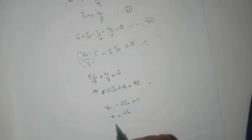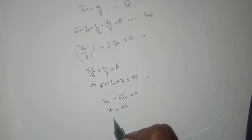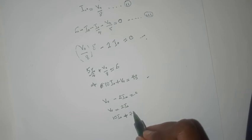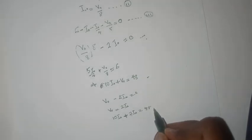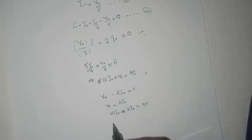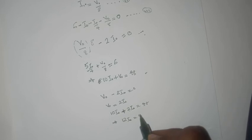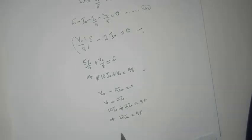That would give us 10 I0 plus 2 I0 equals 48. This would infer that our 12 I0 equals 48. This means that I0 equals 4.